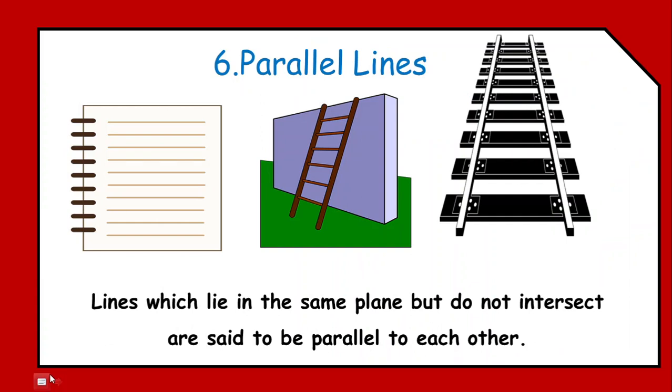The next concept is parallel lines. If you observe the figures, in the first figure, we have a page of a diary, in which there are some lines. In the second figure, we have a ladder, which we use to climb up. And, in the third figure, if you observe, there is a railway track. So, what is the similarity over here? If you observe the figure, the lines never meet each other.